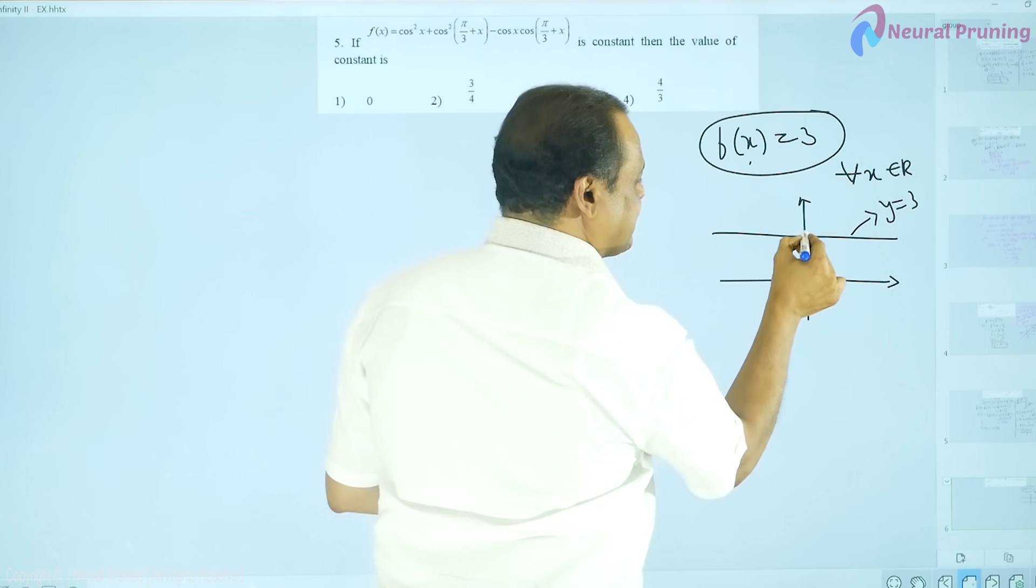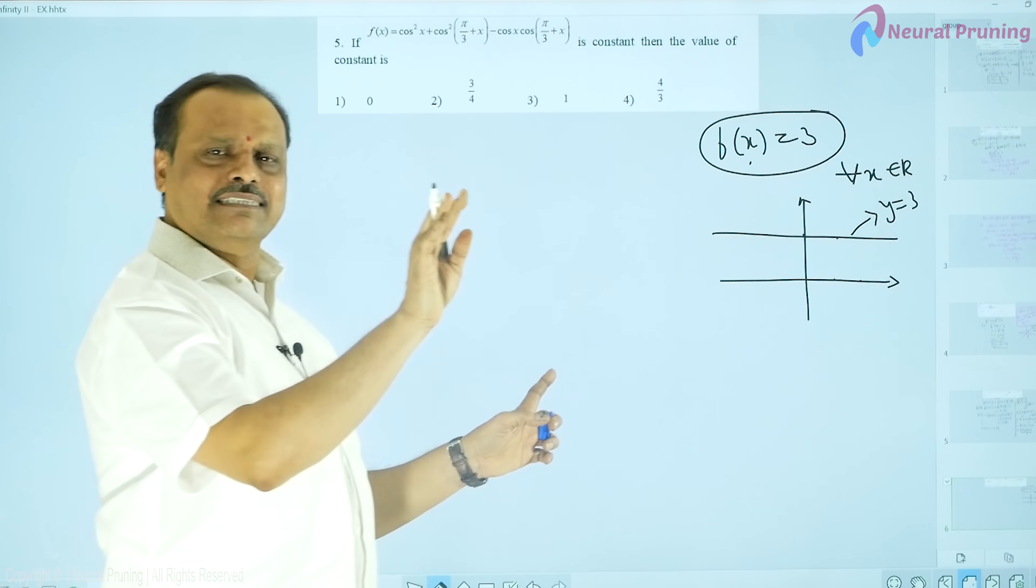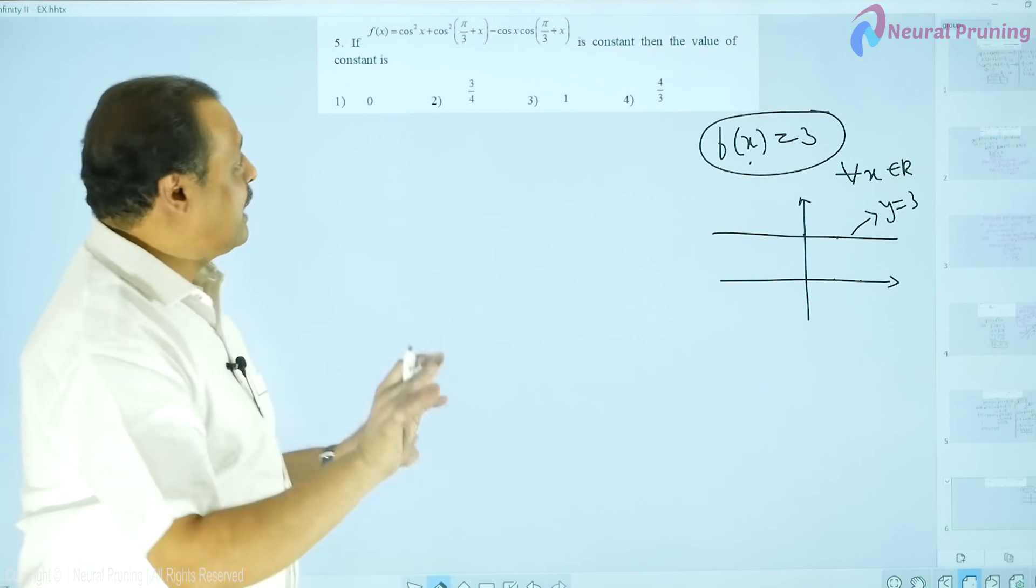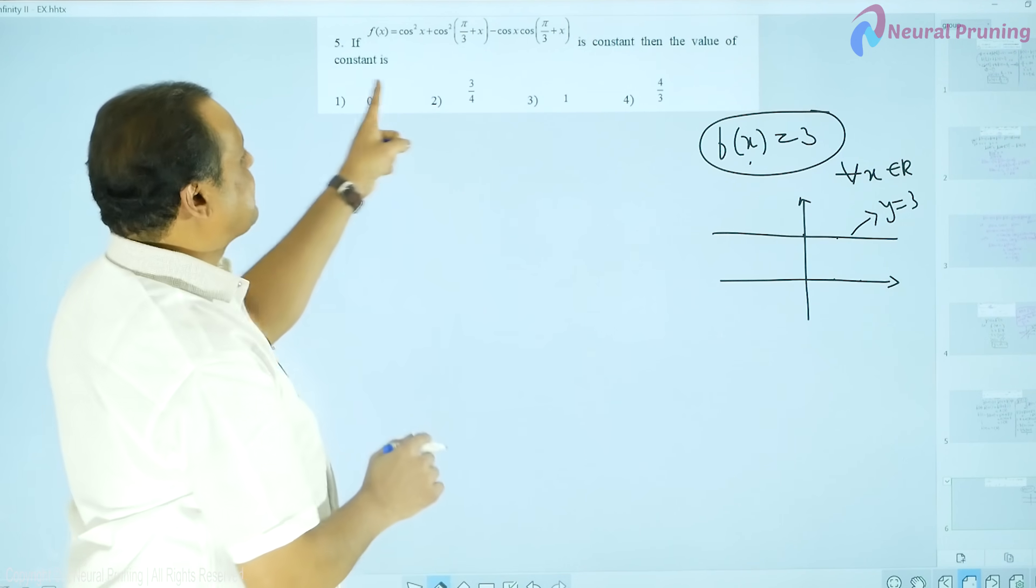For 0, it is 3. For 1, it is 3. For 4, it is 3. For every value of x, the value remains same. So now, I need to find f of x here. So f of x value and the constant is required.